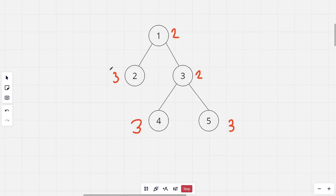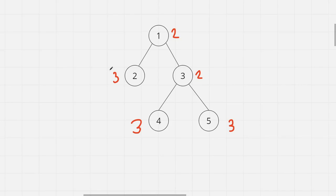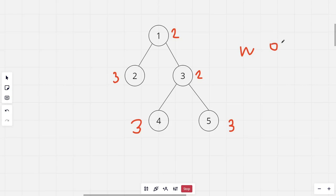The brute force solution would be to run a DFS for each of these nodes and find the furthest distance from that node. But for n nodes we are running a DFS, and the time complexity for each DFS is O(n), so the total time complexity comes out to be O(n²), which is not very efficient.